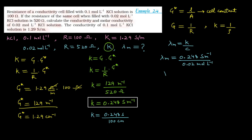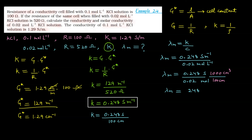Directly यहाँ पर change करते हैं: λm = 0.248 / 0.02 — units हैं siemen और mole। ऊपर liter inverse से ऊपर जाएगा liter, और meter inverse से नीचे आया meter। Meter को हम लिखेंगे 100 cm, और liter को change करना पड़ेगा centimeter cube में — 1 liter = 1000 cm³। So λm = (0.248 × 1000) / (0.02 × 100) = 248 / 2 — unit बचे: siemen cm² mol⁻¹। So λm = 124 siemen cm² mol⁻¹।